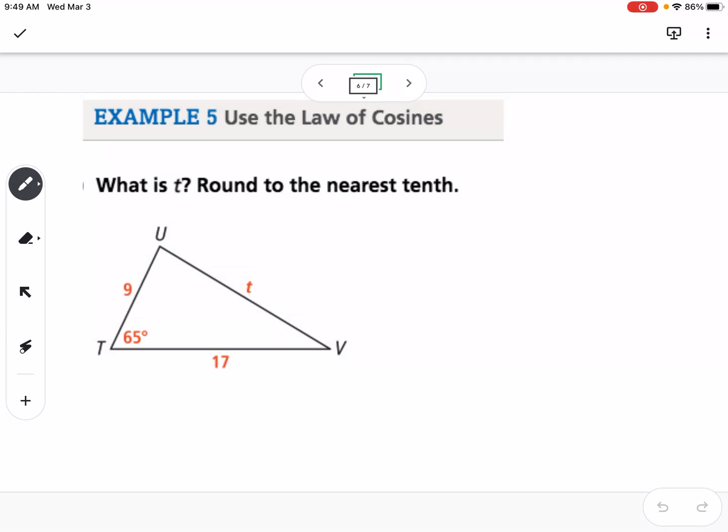And so our last example here is using law of cosines. So law of cosines is good when you have side angle side or side, side, side. So this first example here, we have side angle side. So we're going to find side T. So we're going to use our formula. So it's going to be T squared equals the 2 that I have. So 9 squared plus 17 squared minus 2 times 9 times 17 times the cosine of 65. Again, I'm going to make sure that I am in degree mode in my calculator. So then T squared is equal to 240.68, and then I'm going to take the square root of that to find T, which is going to give me 15.5.